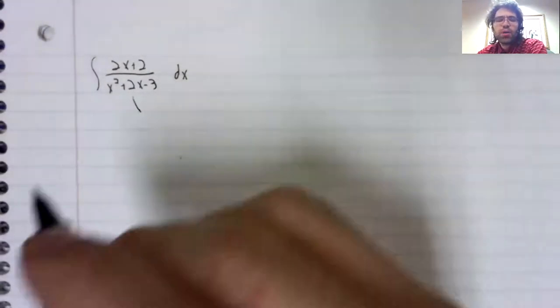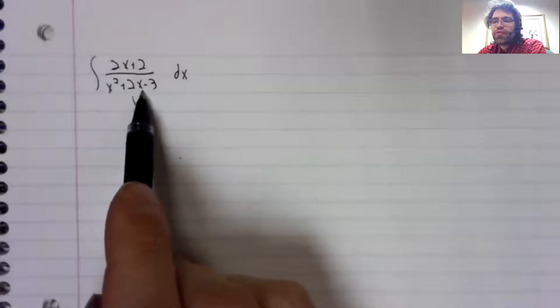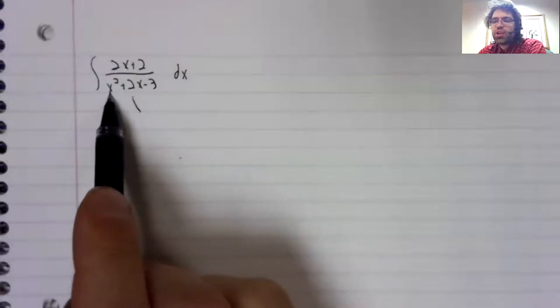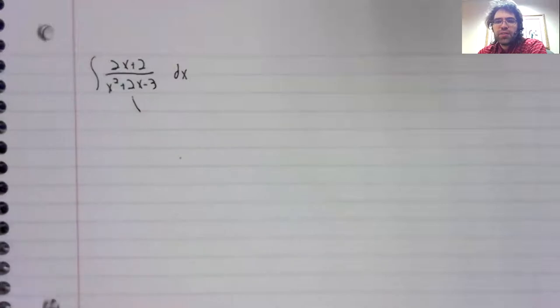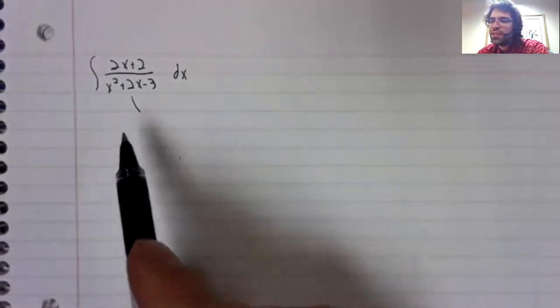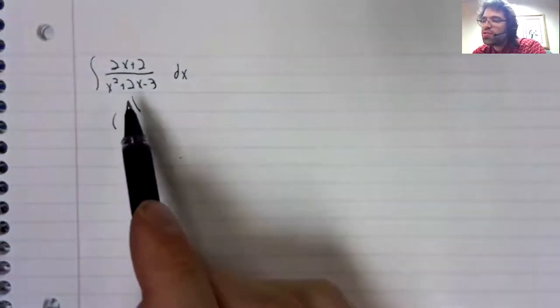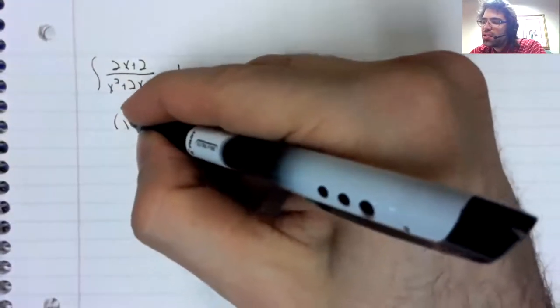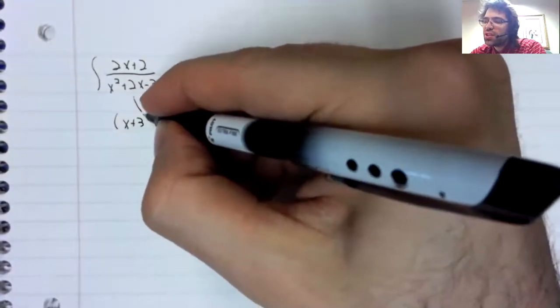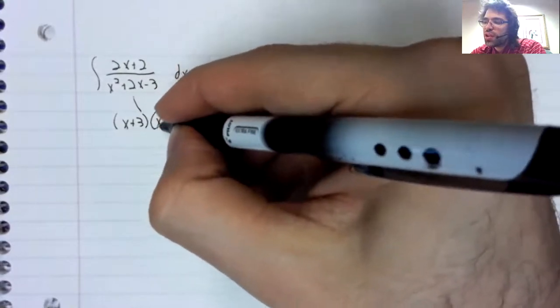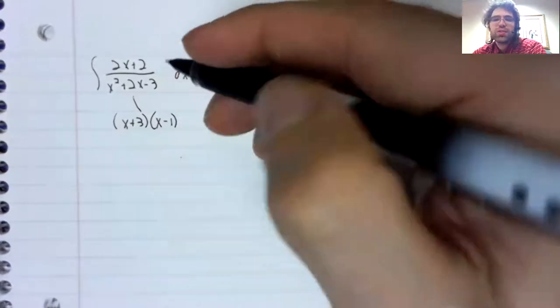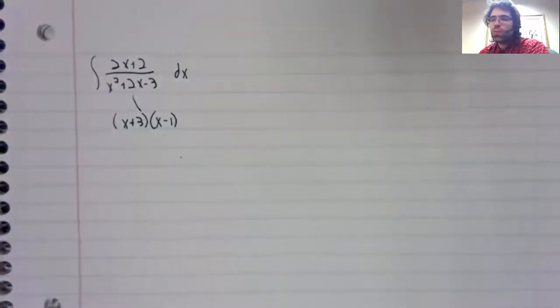To do partial fraction decomposition, you need to be able to factor the denominator. And of course, in a lot of real world situations, factoring by hand isn't so easy. But this problem was designed to work out nicely. That's x plus three times x minus one.